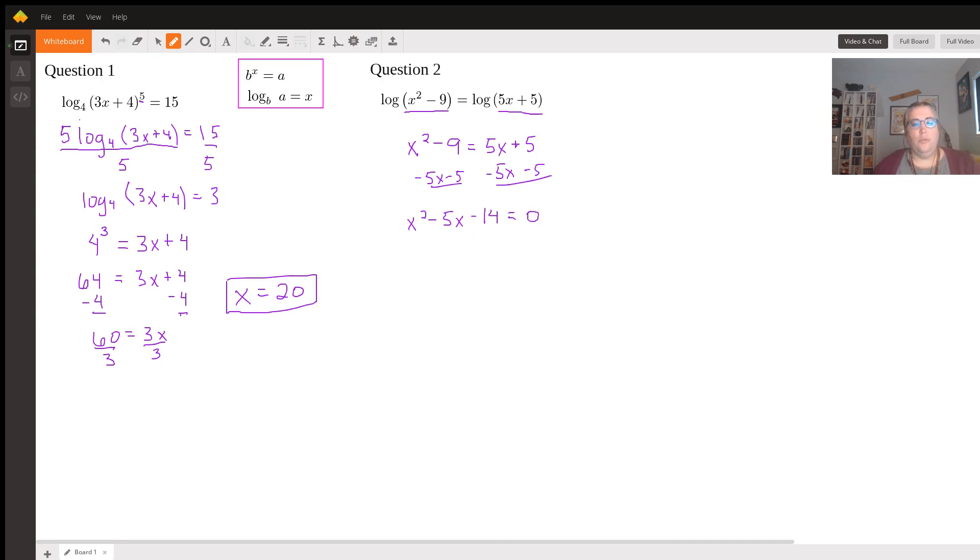Is this factorable? The signs are - this is negative, so it's going to be one's positive and the other one's negative, which means we're going to subtract our numbers. So the factors of 14 that subtract to make 5 are 2 and 7.